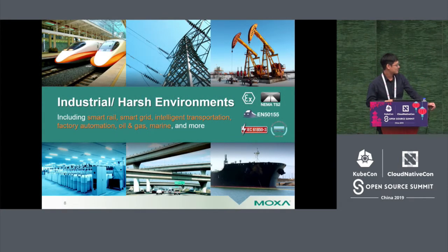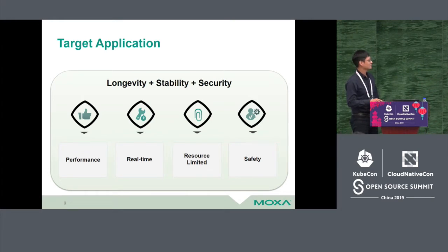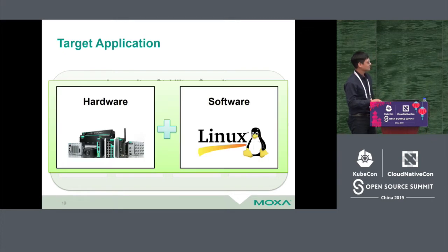Industrial harsh environments include surveillance, grid, transport, factory automation, and oil and gas. There are some common basic features such as longevity, stability, and security, as well as advanced features such as performance, real-time, resource-limited, and safety. Beware that some of these features need special consideration, so we need to evaluate them at the very beginning.